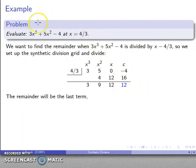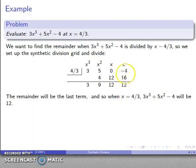So again, my remainder theorem says that if I want to evaluate this at x equals 4 thirds, I'm going to divide by x minus 4 thirds, and the value is going to be what my remainder is. So my remainder is the last term, so when x equals 4 thirds, this expression is going to be equal to whatever the remainder is, is going to be equal to 12.